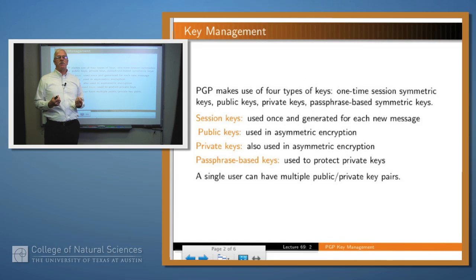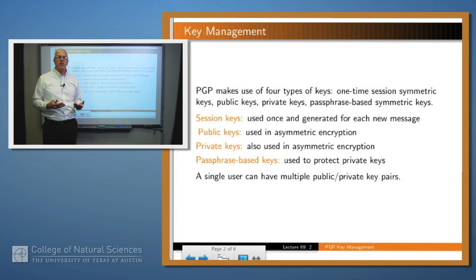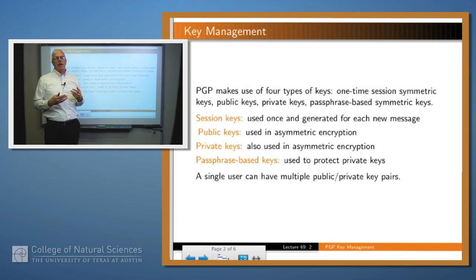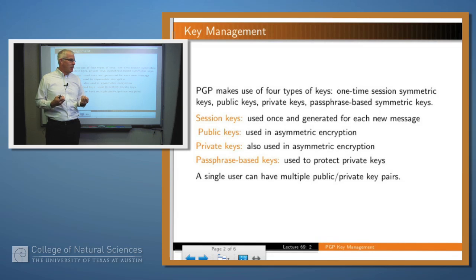In PGP there are actually four different kinds of keys which are used. The session keys, which when you ask for an email to be encrypted, a new session key is generated and used for symmetric encryption. And then there are public and private key pairs, which are persistent and hang around for a while. And then there's something called passphrase-based keys, which are used for storing your private key.